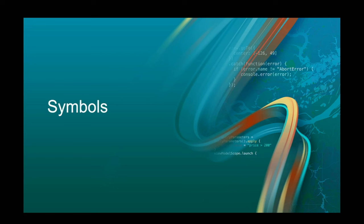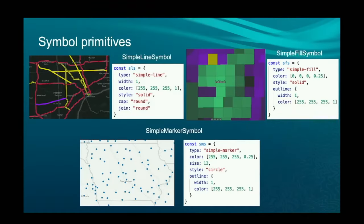The most basic part of visualization with our SDK is the concept of symbology or symbols, particularly with vector data. We have basic symbol primitives: simple line symbol, simple fill symbol, and simple marker symbol — each typically used for lines, polygons, and points respectively, though you can use markers for polygon visualizations as well, fitting nicely as a centroid.